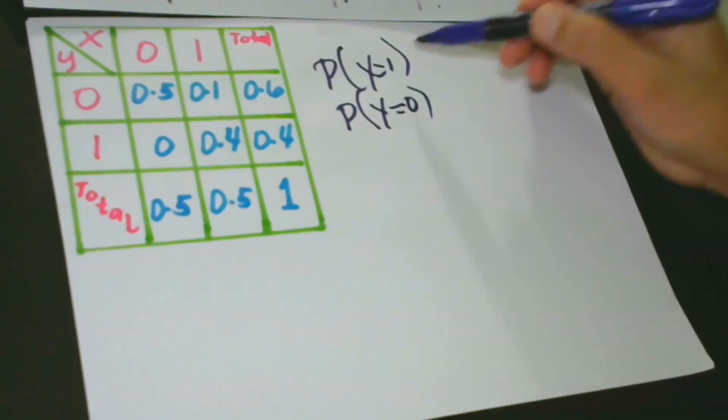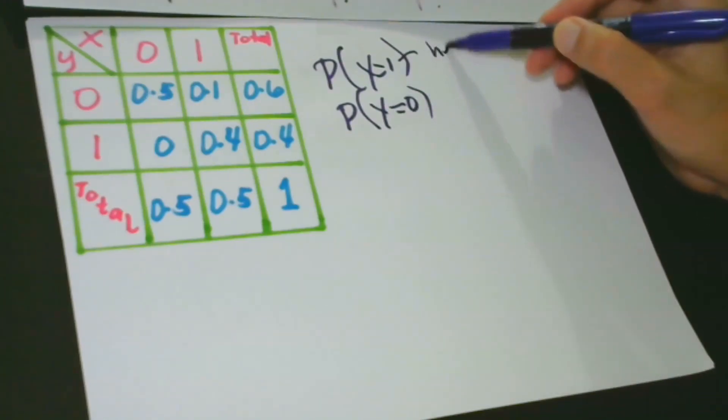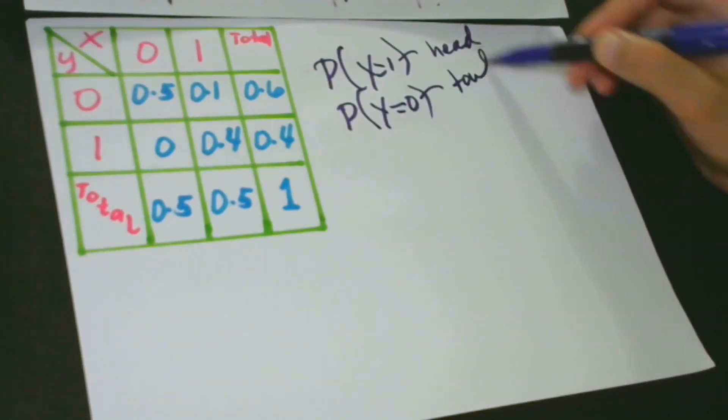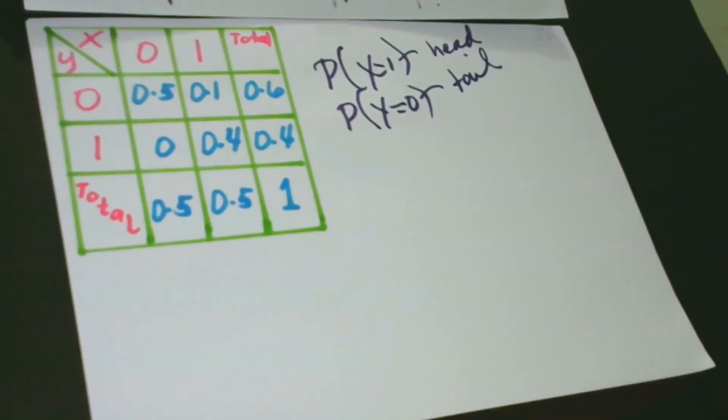One here represents the head and zero represents the tail. If you missed lesson number four, you may go back to lesson number four. And then, when you're done with it, then you can go back to lesson number six for better understanding of our lesson.